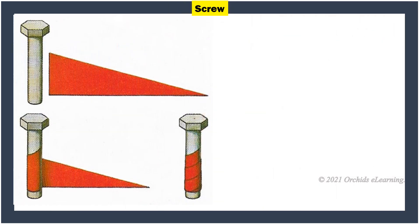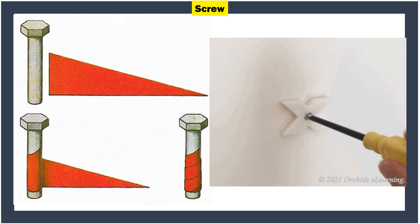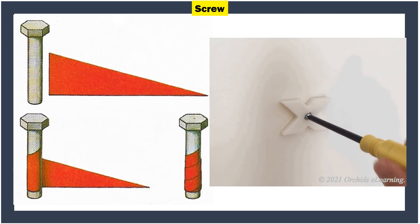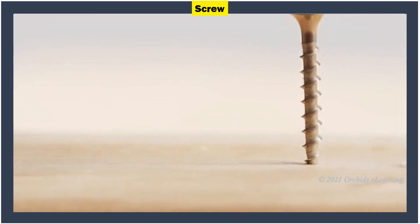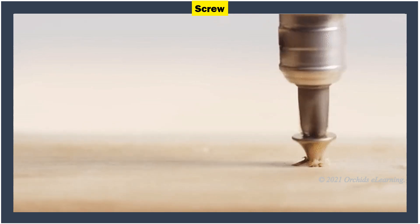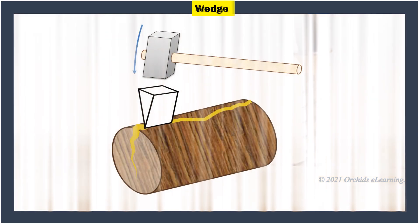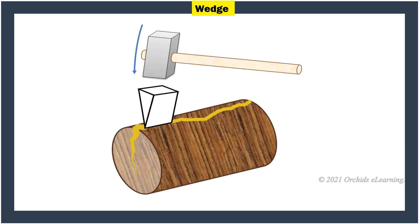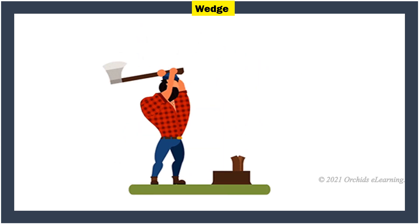Screw: A screw is actually an inclined plane — it is a thread wrapped around a cylinder that has a sharp pointed end. Screws are turned with the help of a screwdriver. As they rotate, they also move forward, so they help to attach things to each other. Wedge: A wedge has at least one inclined plane ending in a sharp edge. This sharp edge helps to cut things — a good example is an axe, with which we cut wood.